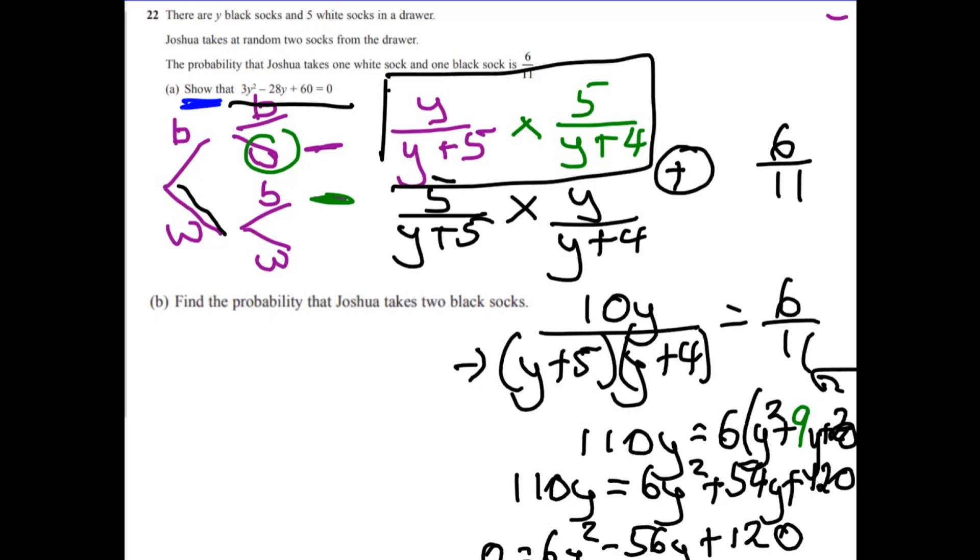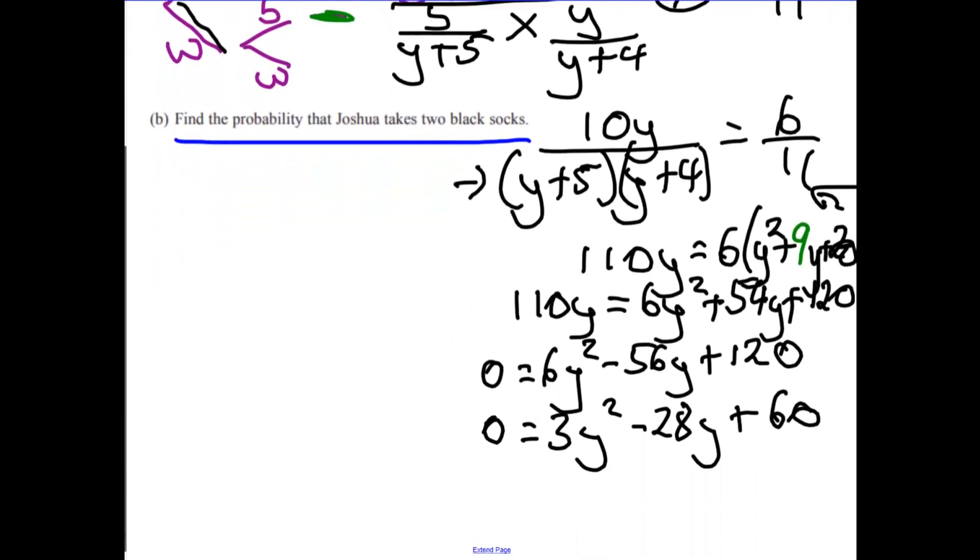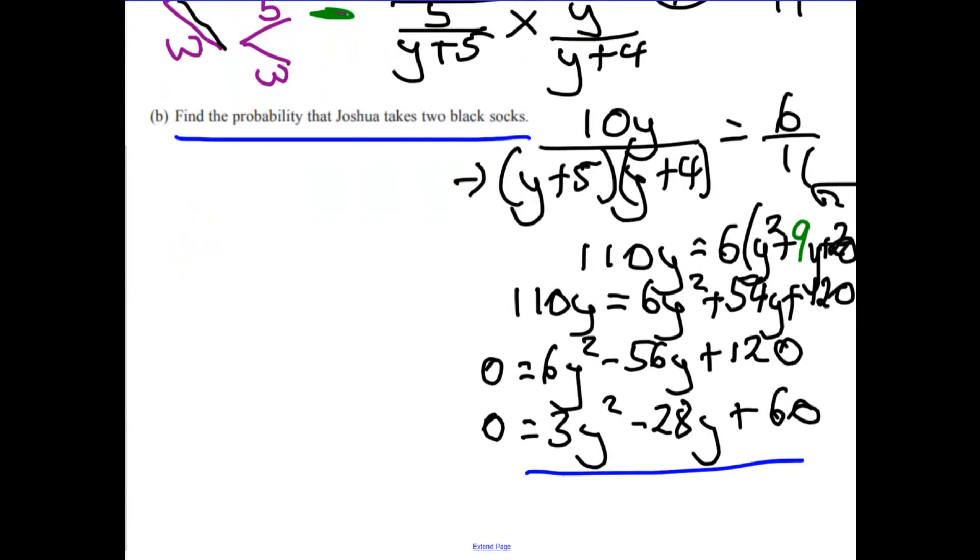So it says find the probability that Joshua takes two black socks. Okay, so let's have a little think about what needs to happen for that to be the case, taking two black socks. Well, I'll tell you what might be a good idea: let's just work out what y is. Okay, let's solve it, let's find out what that's going to be.